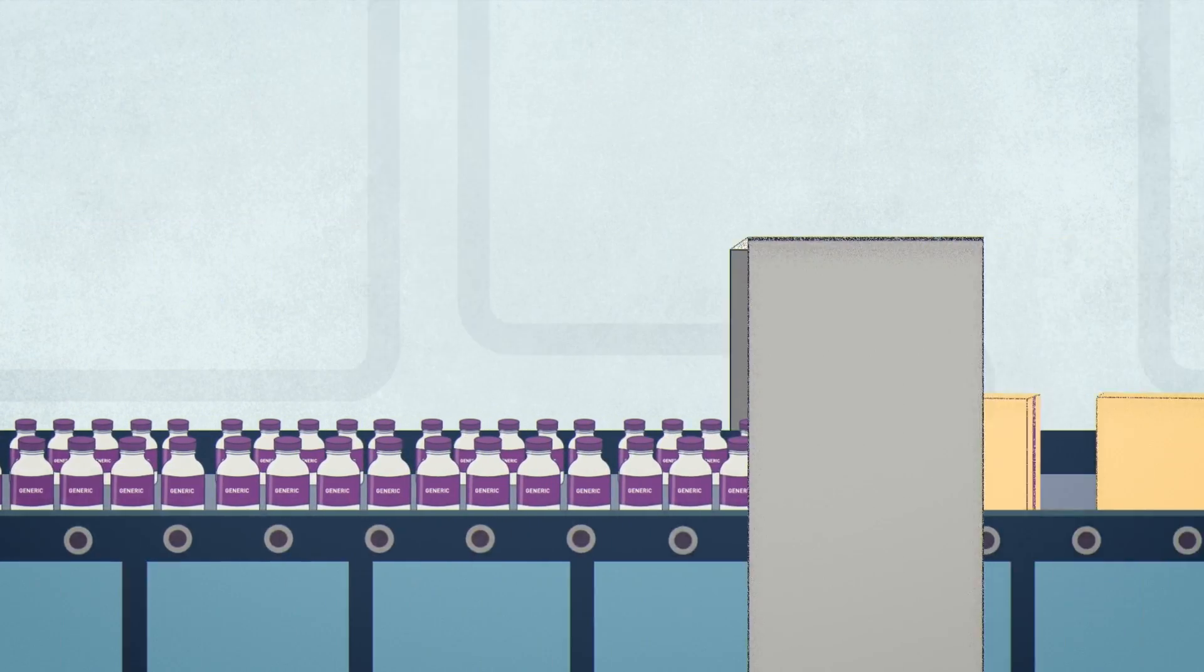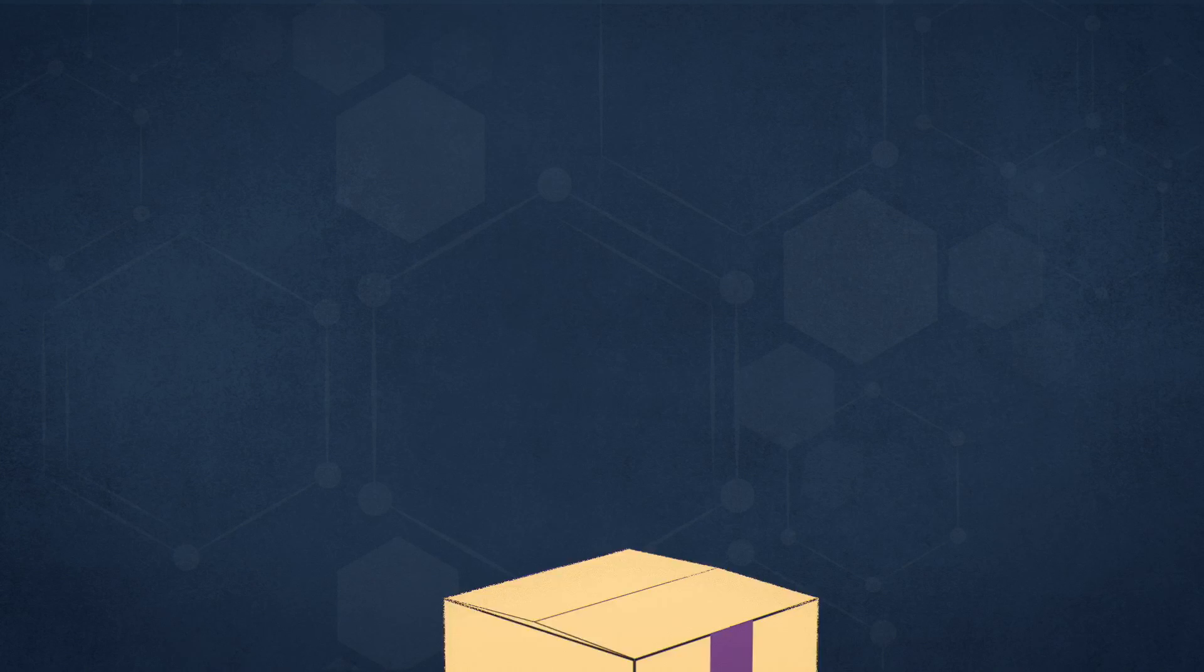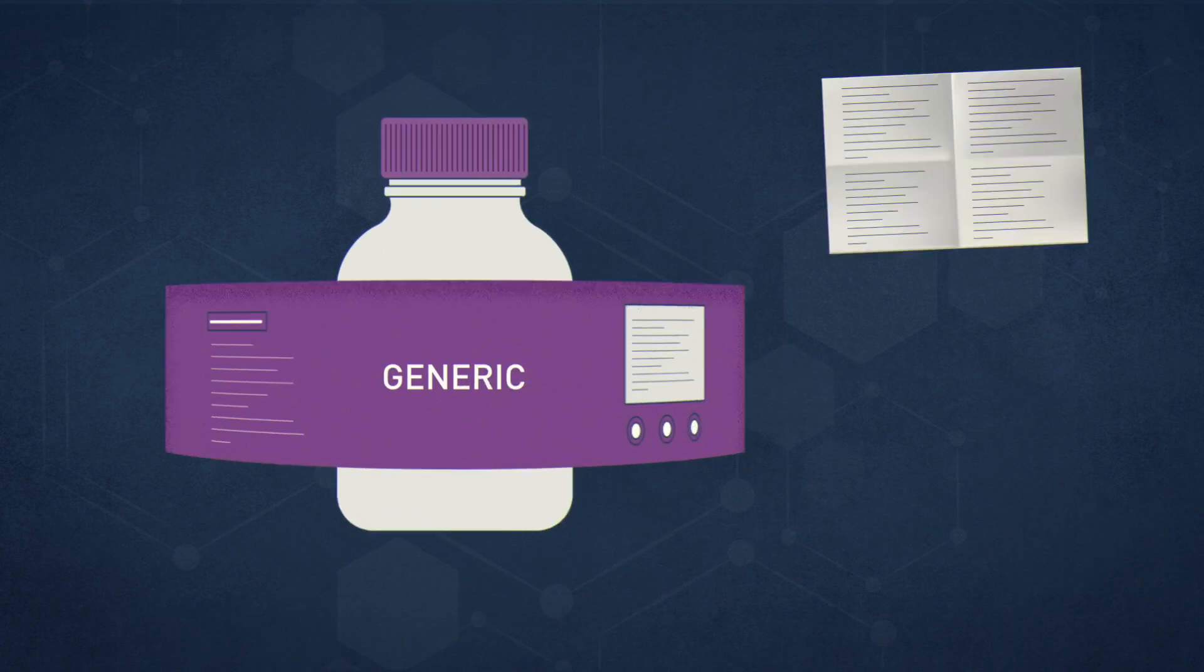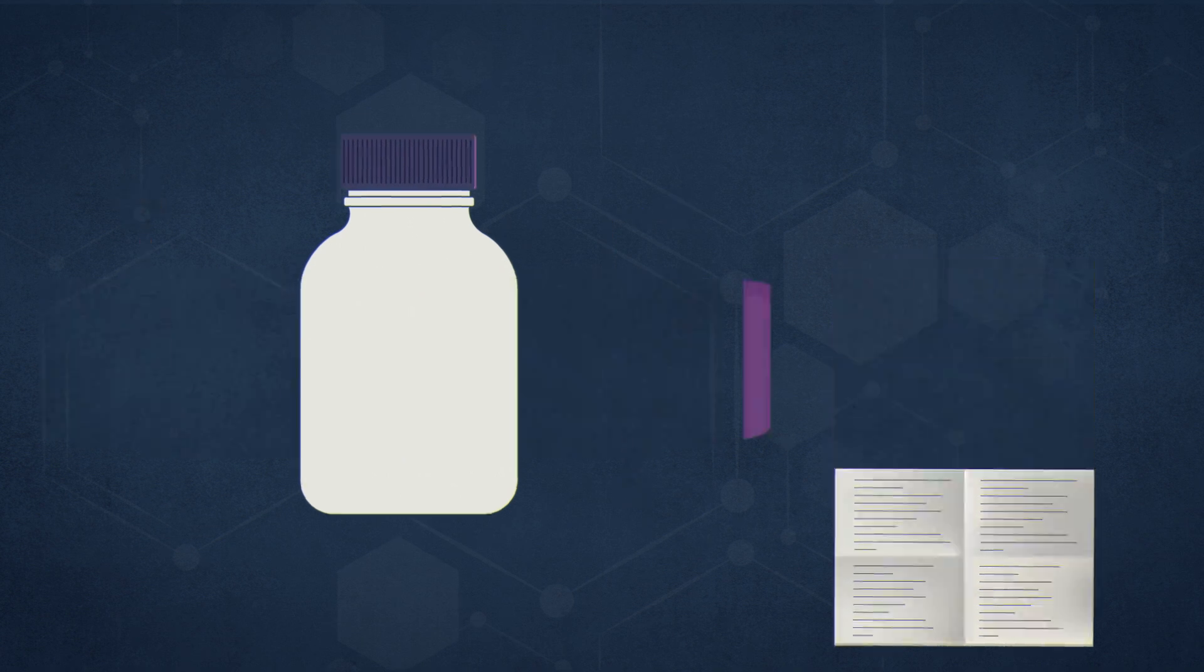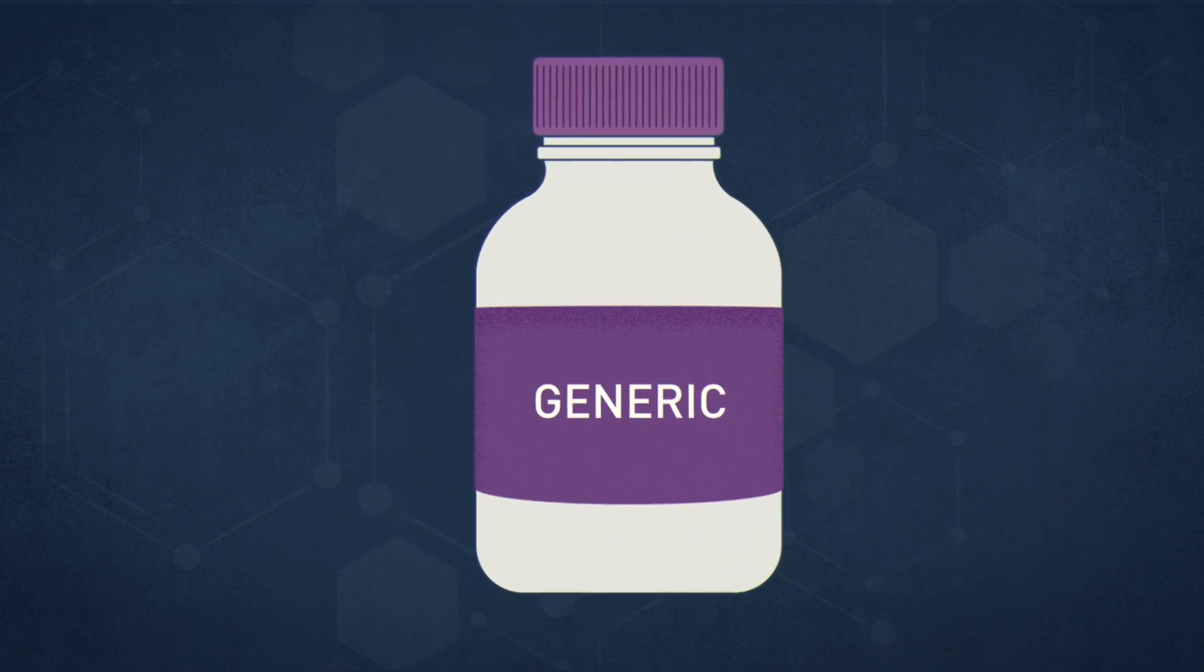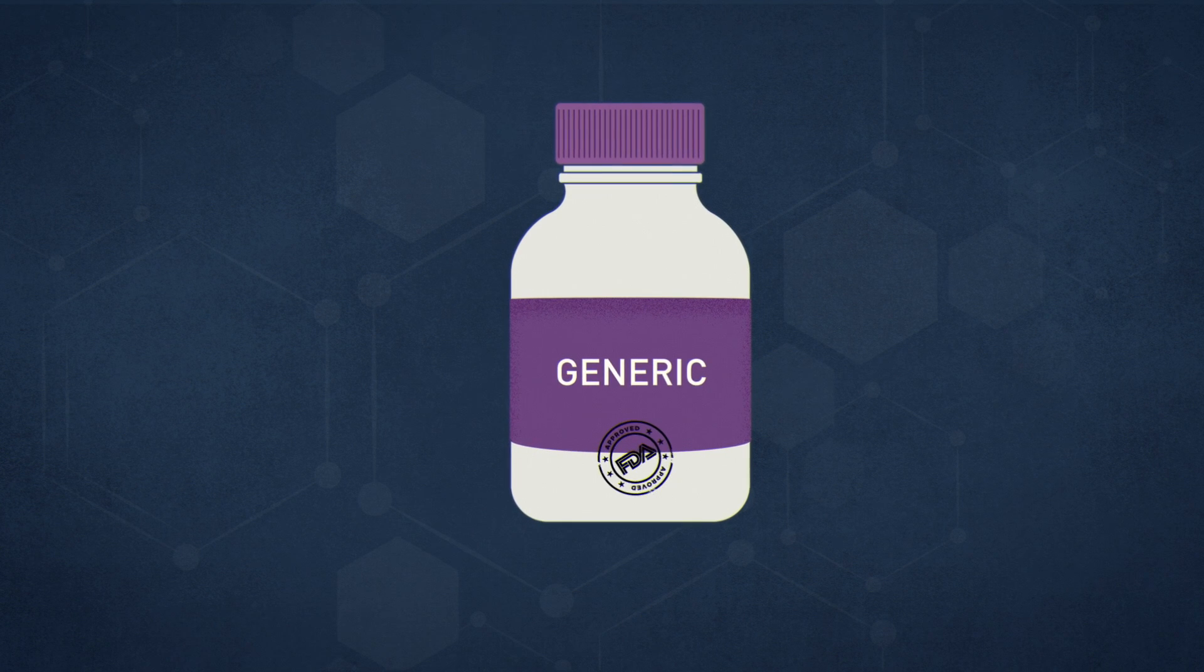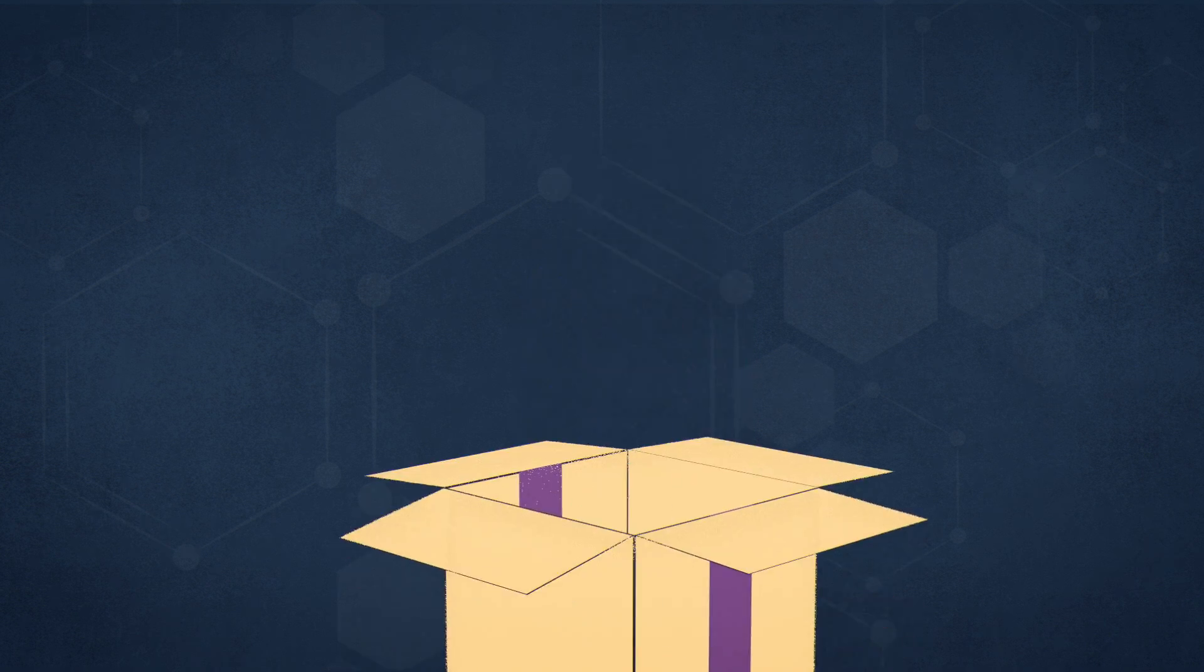Packaging must preserve the quality of the generic drug, and the label or prescribing information must be the same as the information that comes with a brand-name drug. Only after the generic drug checks all these boxes can it get the FDA's stamp of approval.